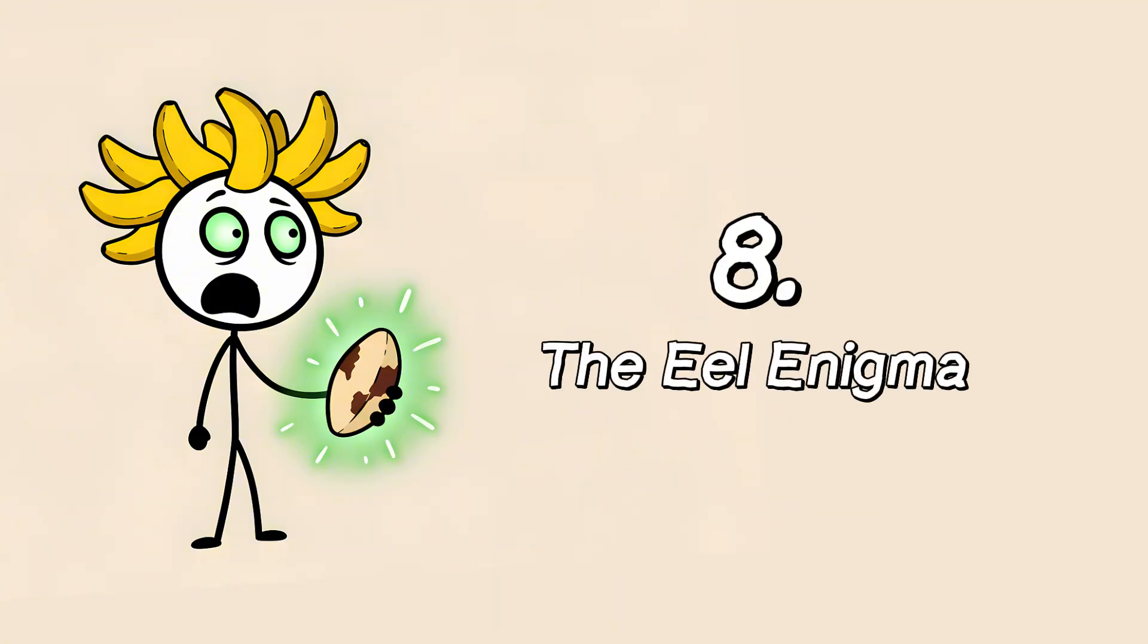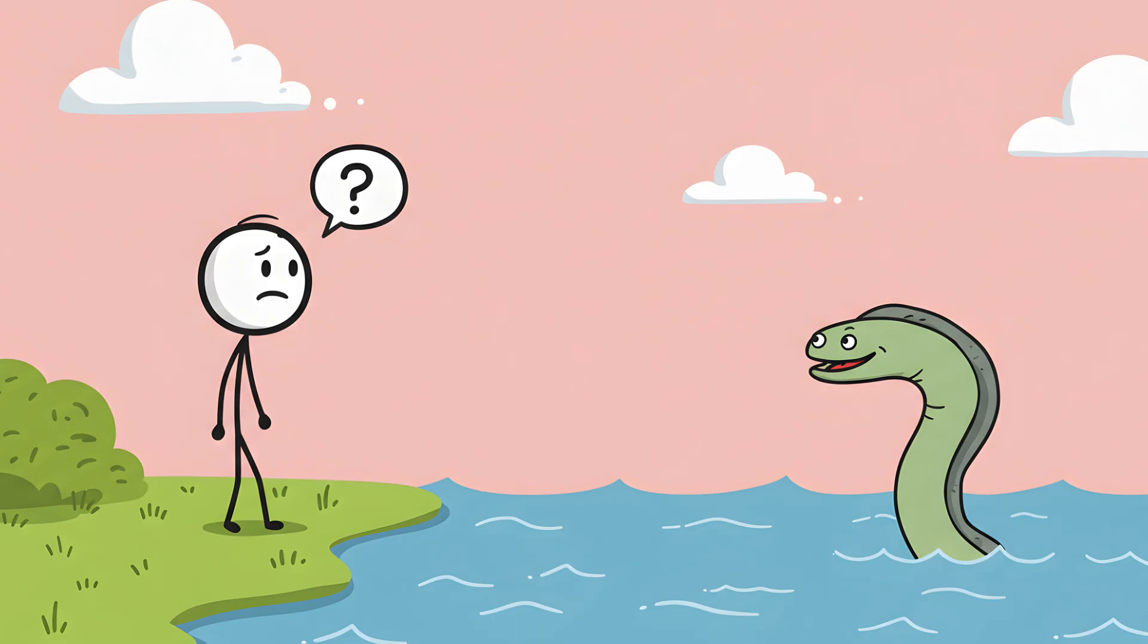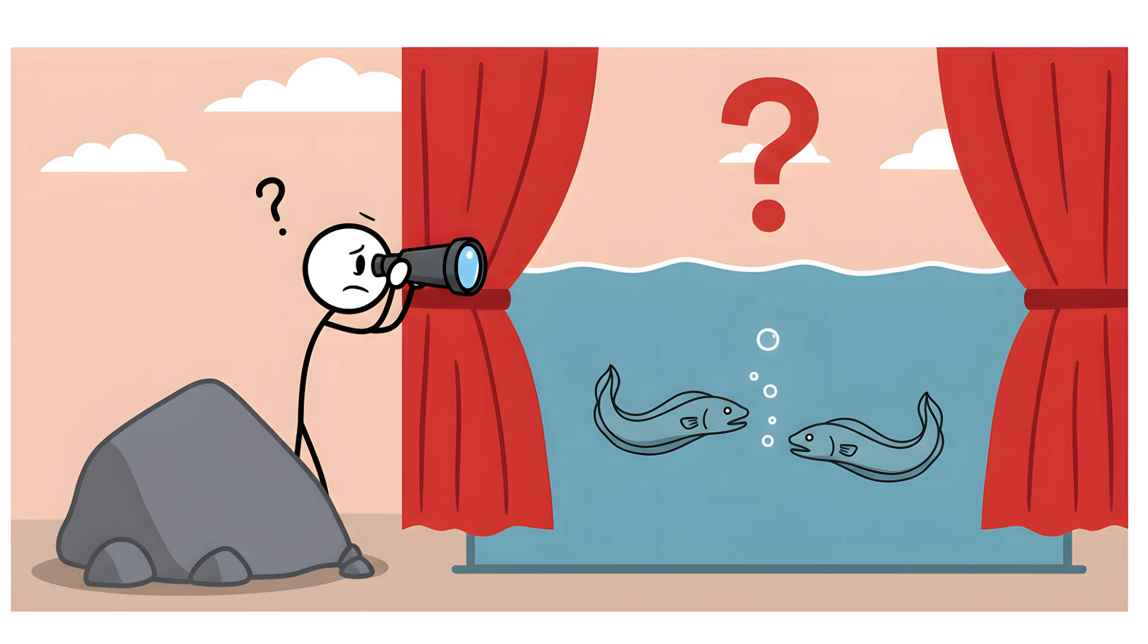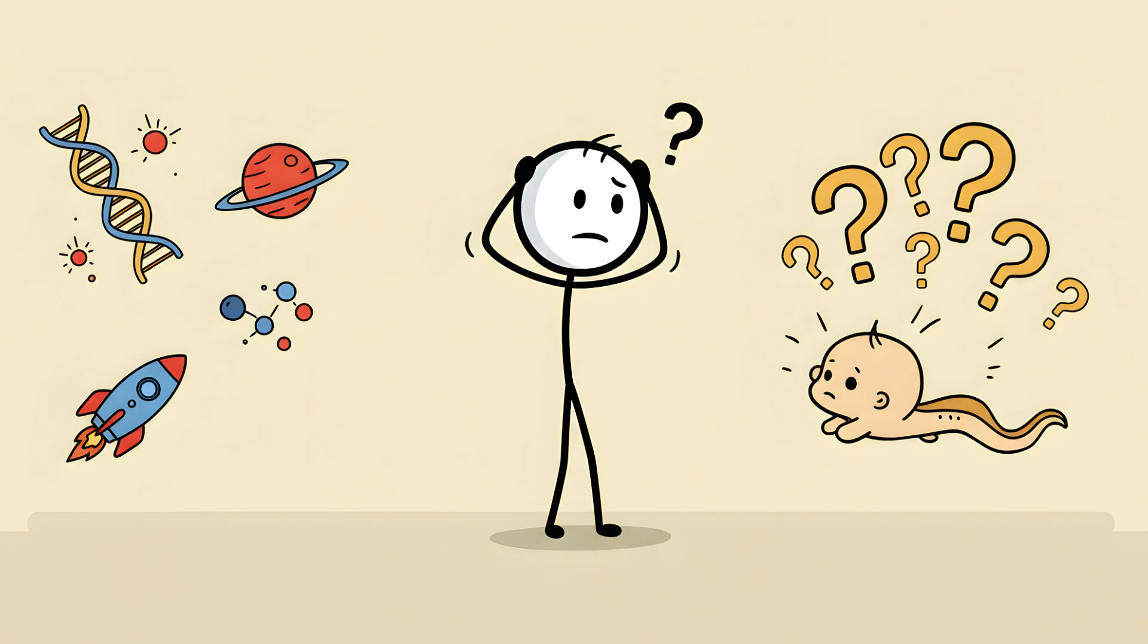Number eight. The eel enigma. For thousands of years, the European eel has been laughing at us, silently, from a distance. See, for the longest time, humanity had a simple, embarrassing problem. Nobody had ever seen an eel get it on. Seriously. We've mapped the human genome. We've sent robots to Mars. But for centuries, we couldn't figure out where baby eels came from.